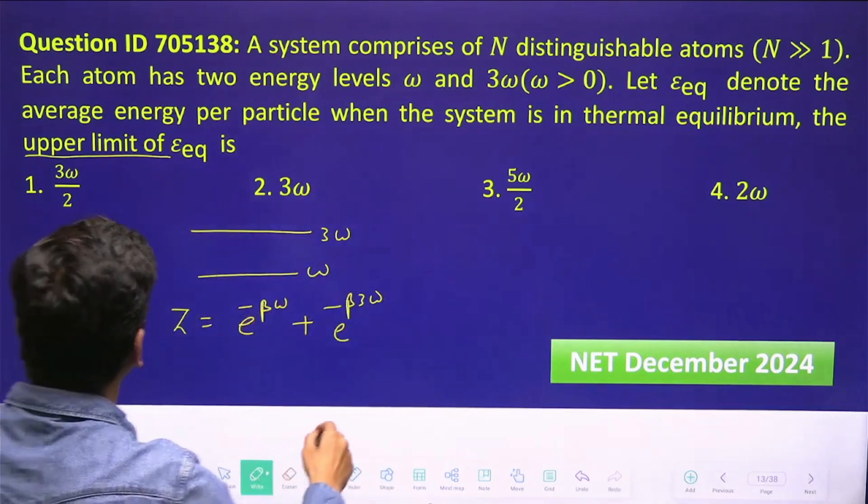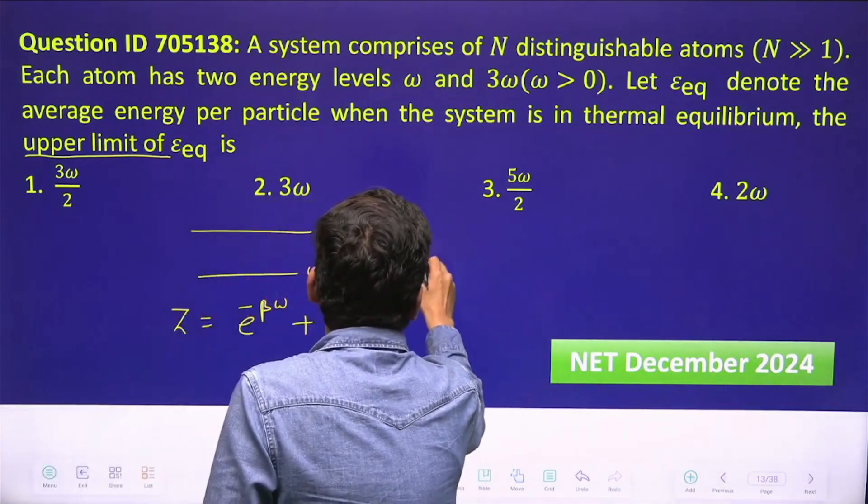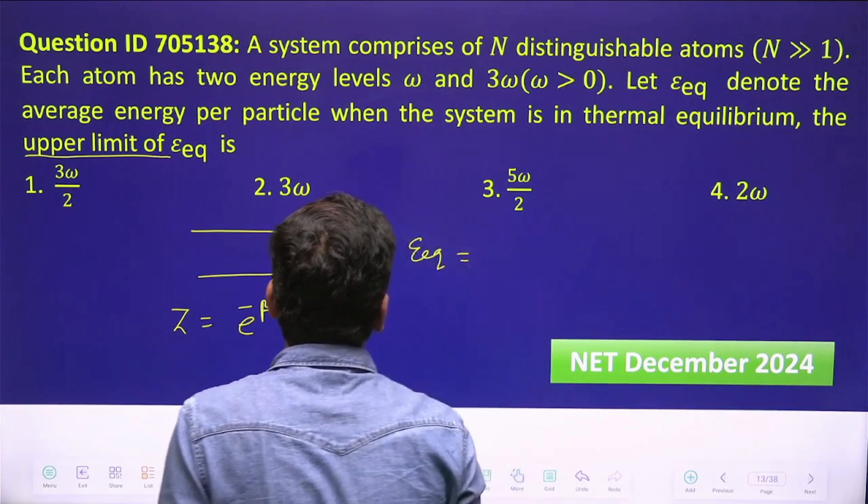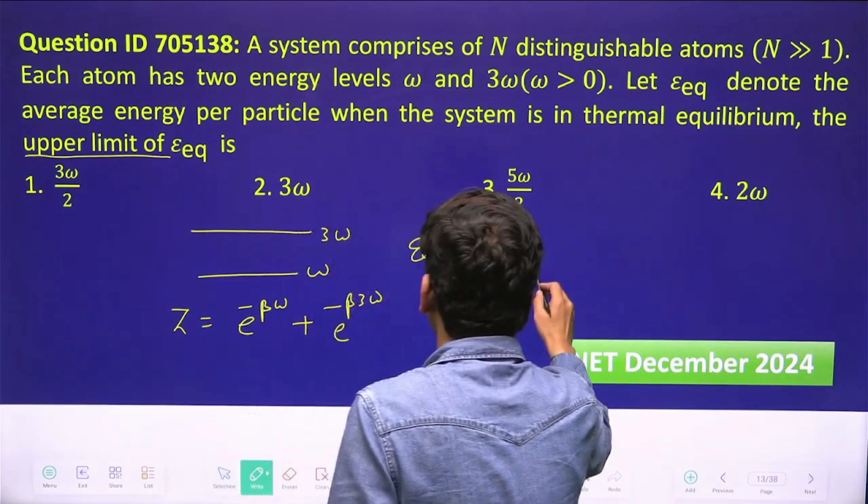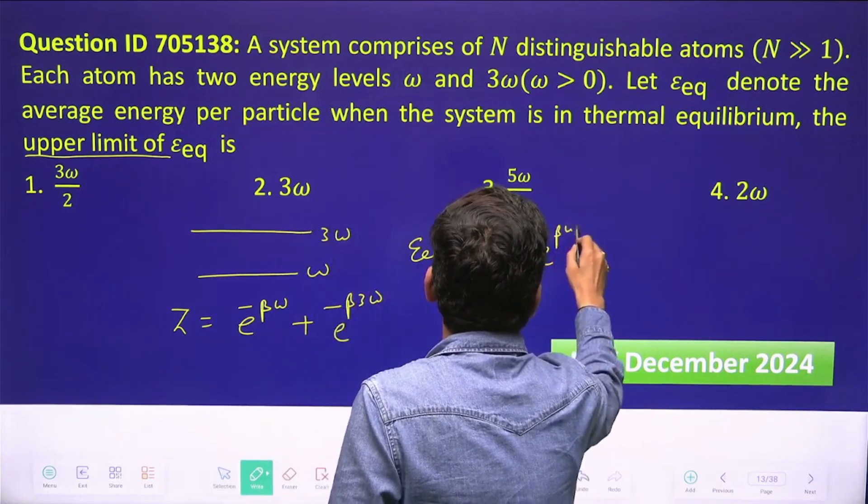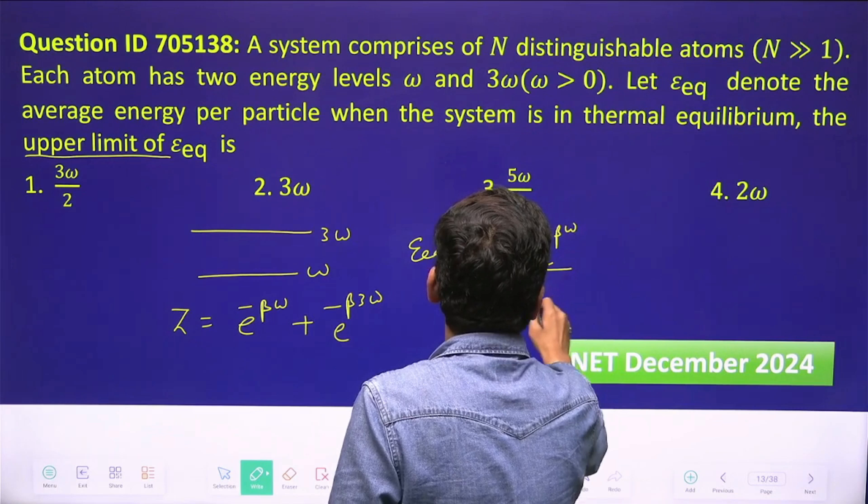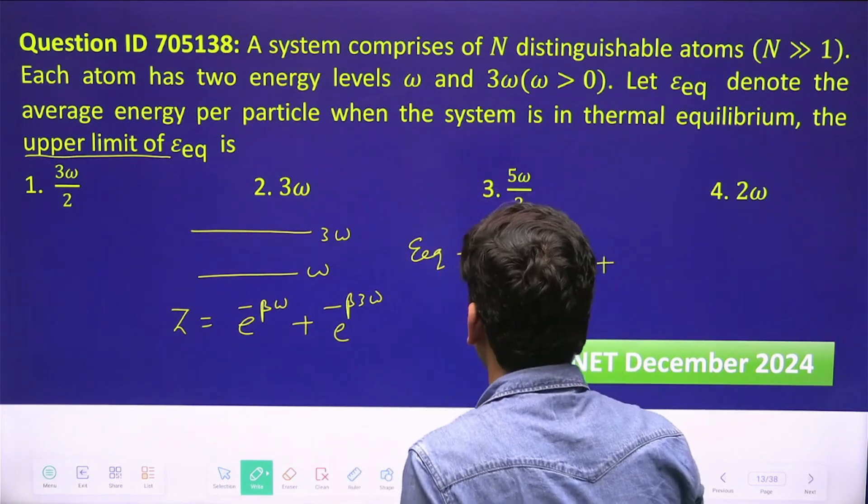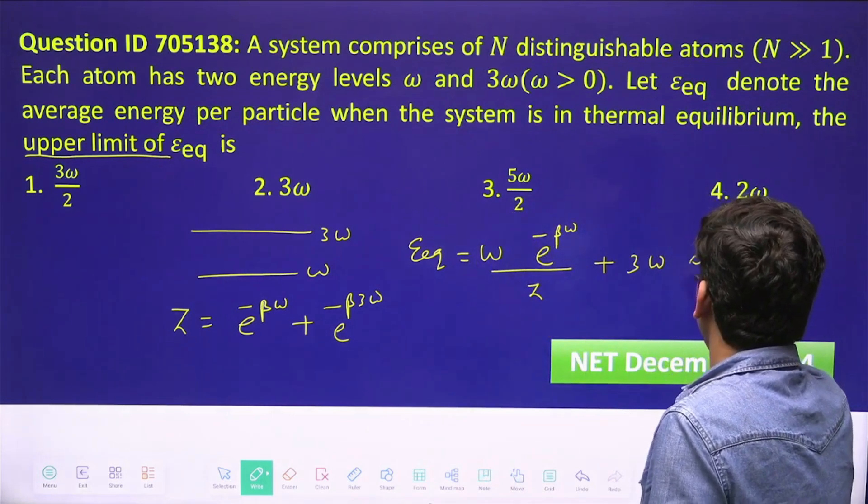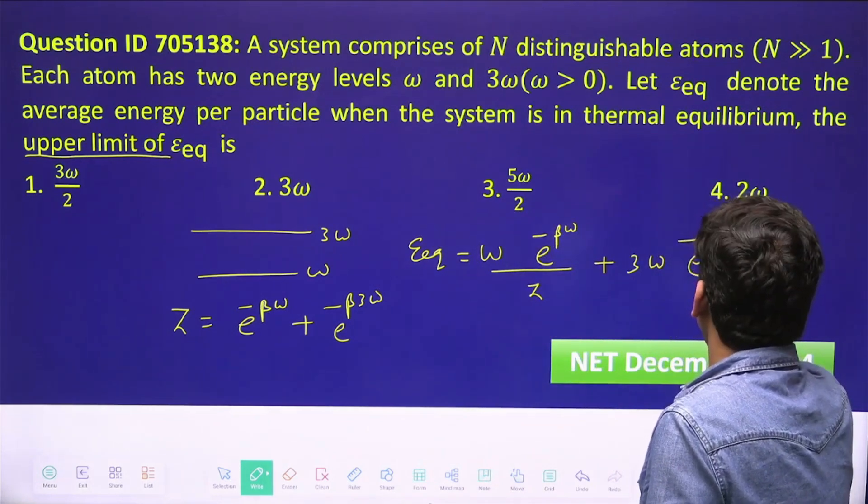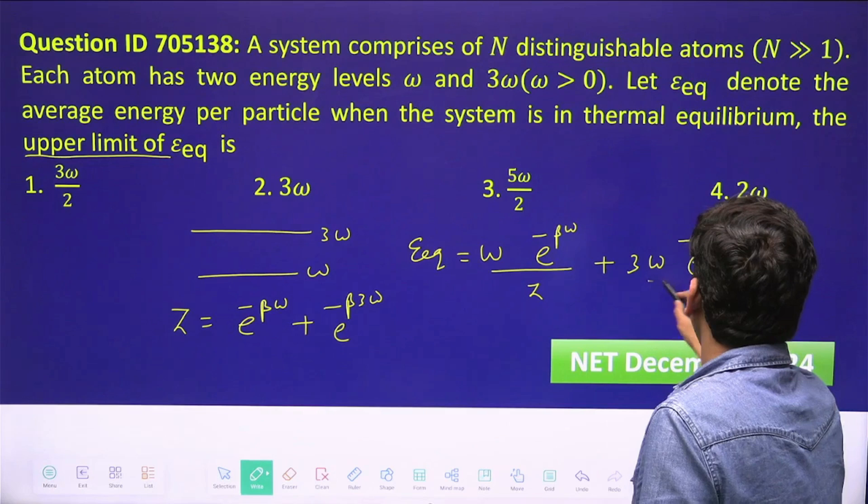E_eq denotes the average energy per particle, so E_eq will be equal to omega times the probability, which is e^(-beta*omega)/Z, plus three omega times e^(-beta*3*omega)/Z.